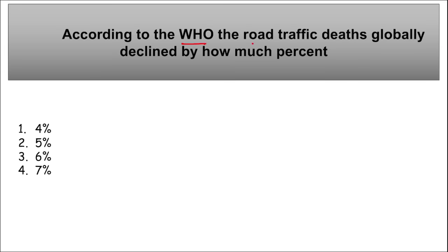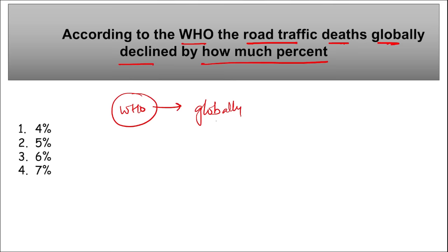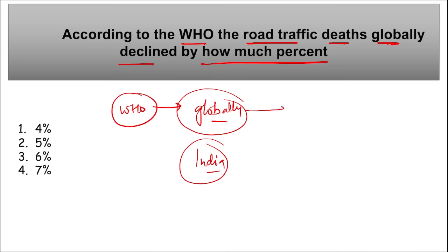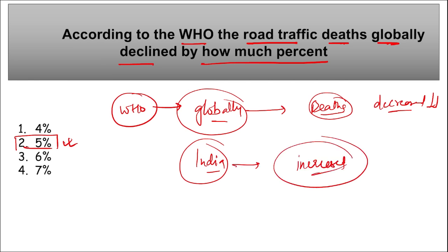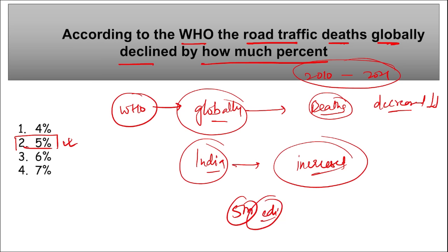According to WHO's fifth global status report on road safety, global road traffic deaths have decreased by 5% over the 2010–2021 period. However, in India, road accident deaths are increasing. This was the fifth edition of the report. WHO Director General: Dr. Tedros Ghebreyesus; headquartered in Geneva, Switzerland; established 1948.